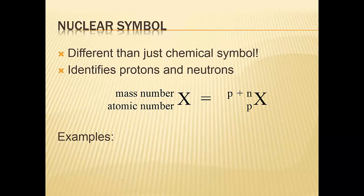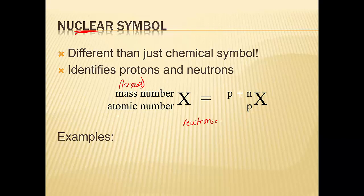How do we represent? There are a couple of different ways you need to be comfortable with. One is called the nuclear symbol. What's in the nucleus? Protons and neutrons. So it's the symbol telling you how many protons and neutrons are in there. You always put the mass number on top — this is the largest number, always goes on top. The atomic number is on the bottom. Mass number is your protons plus neutrons, and the atomic number is just your protons. To figure out neutrons, all you do is subtract: neutrons equals mass number minus atomic number.